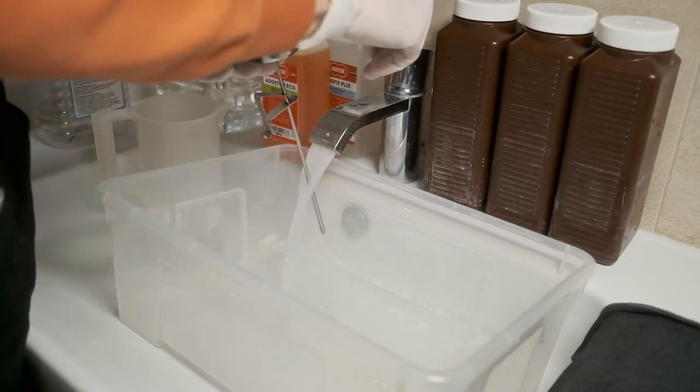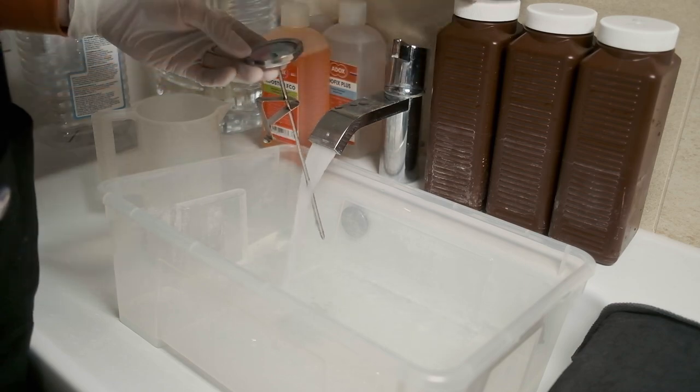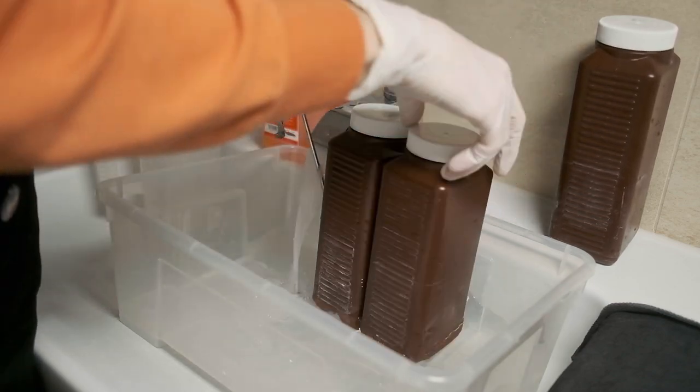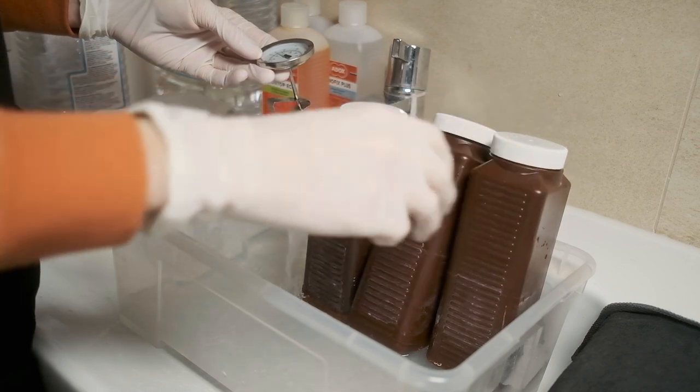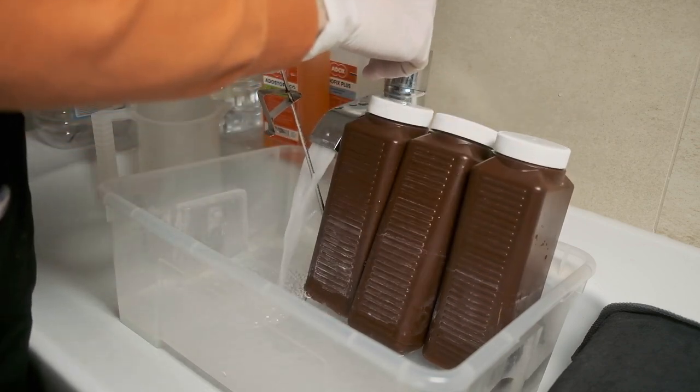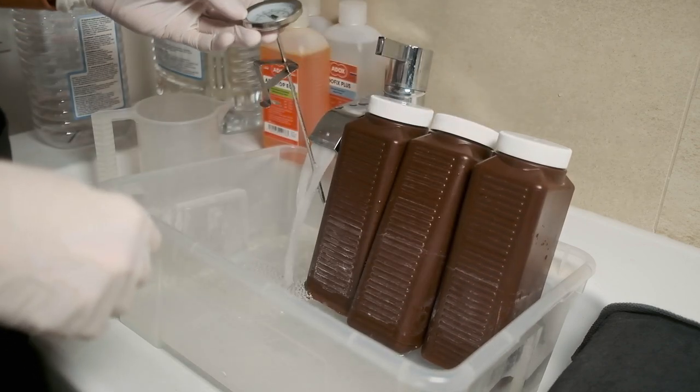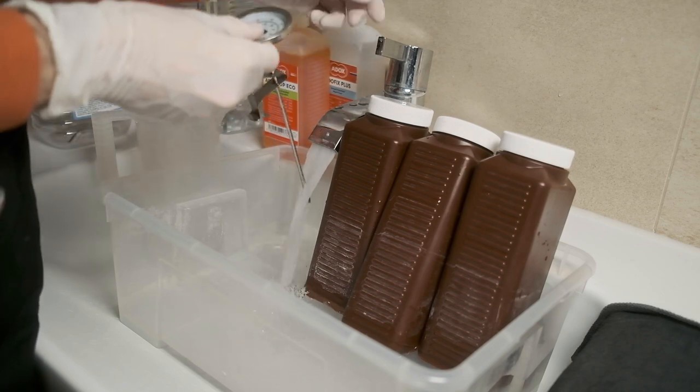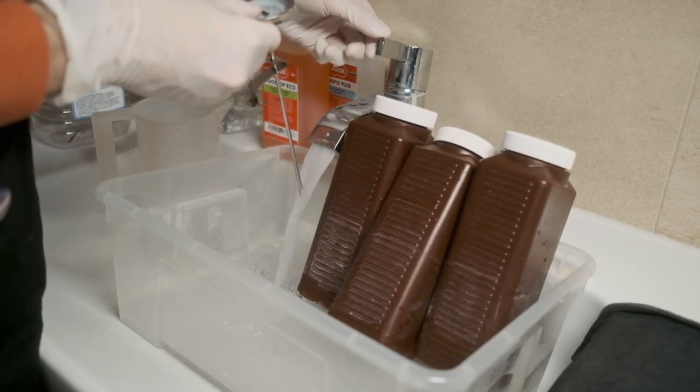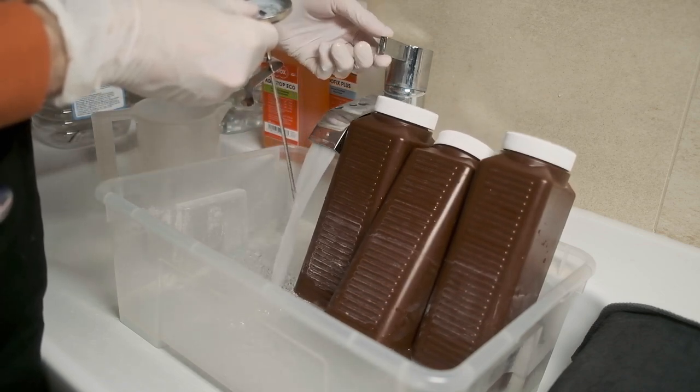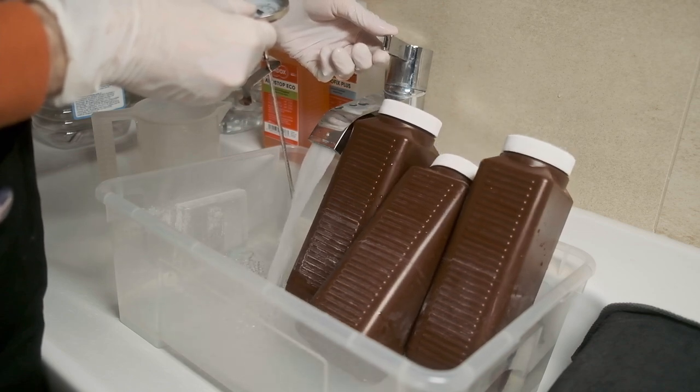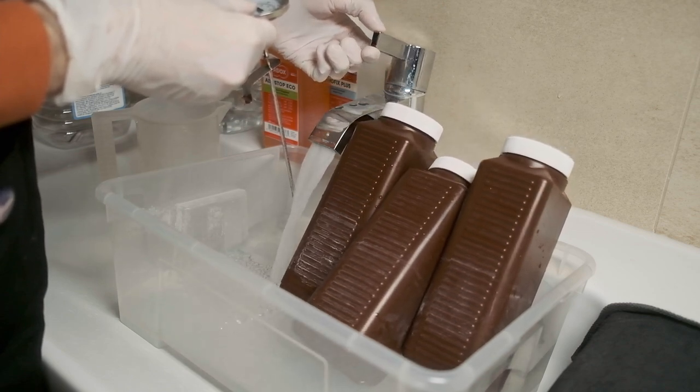In principle all the measuring flask and measuring cylinders also calibrated on the 20 degrees, but as you can understand the plastic one with a precision of ±2ml it's not really important to have exactly 20 degrees for any type of measurements, but for chemical development it's actually quite important to have a proper degree of temperature.